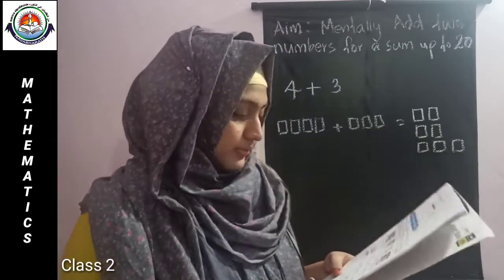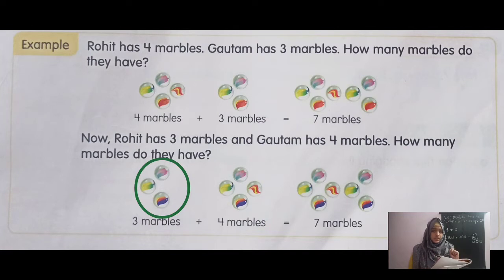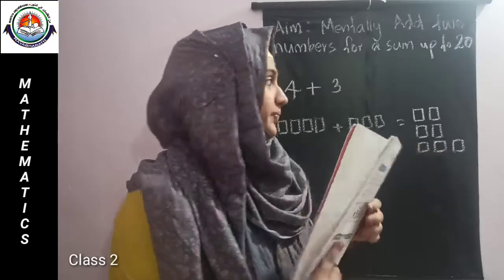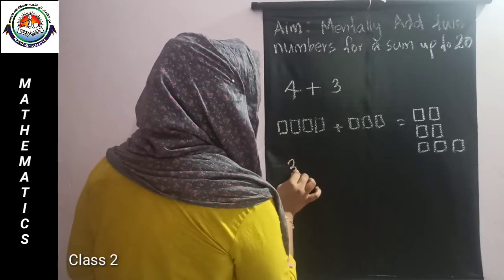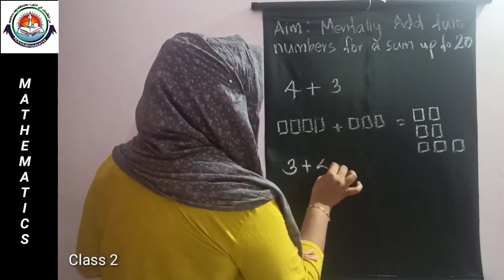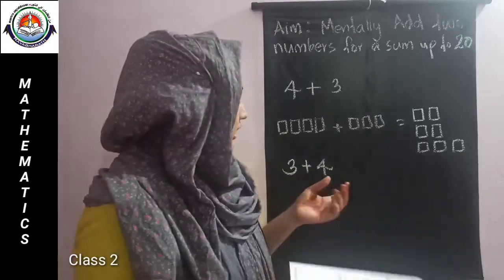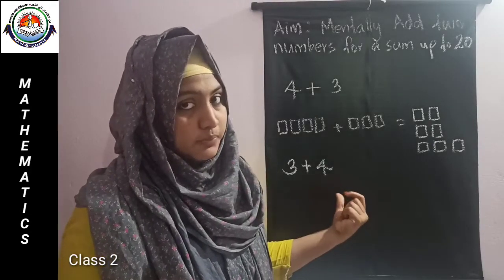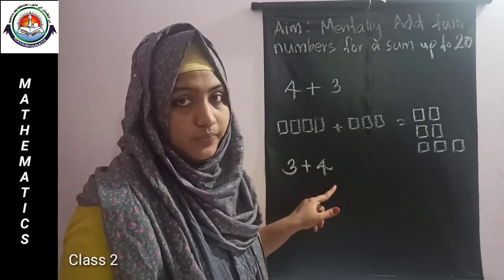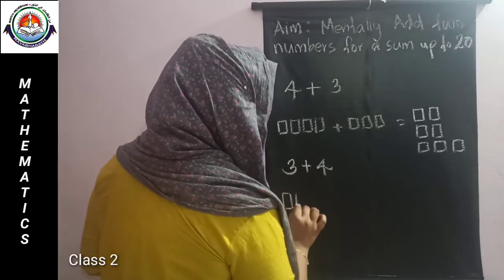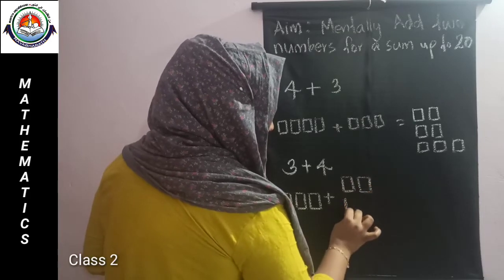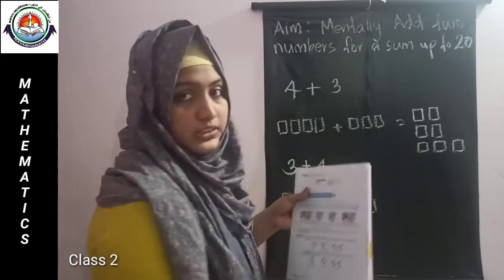Now Rohit has only 3 marbles and Gautam has 4 marbles. How many marbles do they have? We can check. Rohit has 3 marbles, Gautam has 4. We have to add these numbers. What is 3 plus 4? We can check: 1, 2, 3 plus 1, 2, 3, 4. It is already given in your textbook.